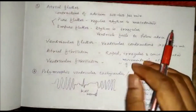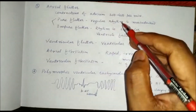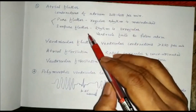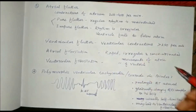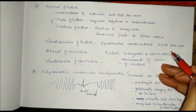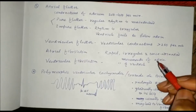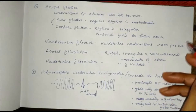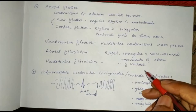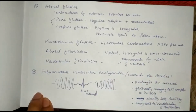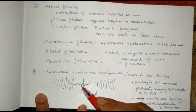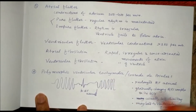There can be bradycardia when the heart rate is less than 60. When contractions of the atrium are more than 200 to 400 per minute, we call it atrial flutter — pure flutter when regular rhythm is maintained, or irregular when the ventricle fails to follow the atrium. Similarly there can be ventricular flutter when there are more than 250 contractions per minute. Atrial flutter can lead to atrial fibrillation — rapid, irregular, uncoordinated, chaotic movements of the atria. Rapid, irregular, and uncoordinated movements of the ventricle result in ventricular fibrillation. And sometimes there is polymorphic ventricular tachycardia with a prolonged QT interval and gradually changing QRS complex in the ECG — these are called torsades de pointes, which are usually self-limiting but may lead to ventricular fibrillation.